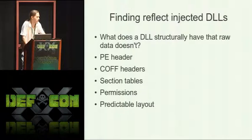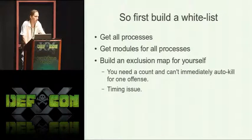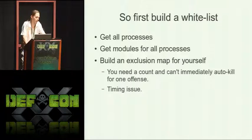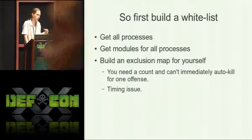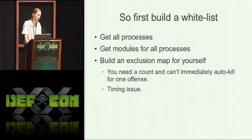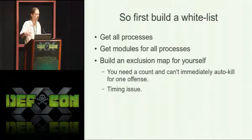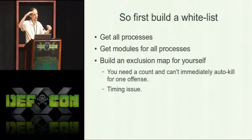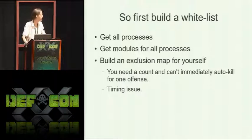Then there's the predictable layout — that's speaking of where allocations happen in memory. First you could build a whitelist: get a list of all processes, all modules in all processes, and that's essentially your exclusion list. You've got the rest of memory to check, see if it's in use, see what permissions it has, see if it has PE-like headers or structures, and then you could automatically kill anything you think is reflectively injected. There's an issue with delay-loaded DLLs — say you turn on Windows Media Player and it loads another DLL in the moment between when you've scanned for new modules and when you start checking memory space. You can accidentally kill applications, so it has to happen a couple times in a row to actually be viable.